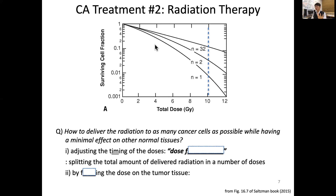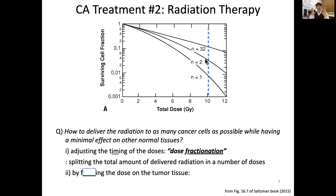This graph shows the rationale for dose fractionation. With 10 gray given in one time, less than 1% of cells will survive, which is bad for our normal tissue. If we divide it into two doses, a much higher portion of cells will survive. If we divide it as many as 32 fractions, about 10% of the cells can still survive. The cumulative effect on the cancer remains the same, but we can save normal cells better.